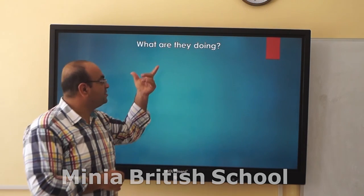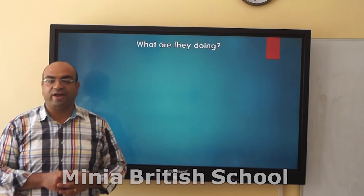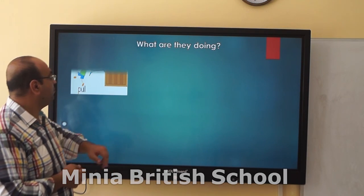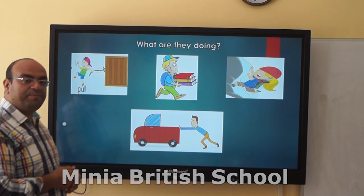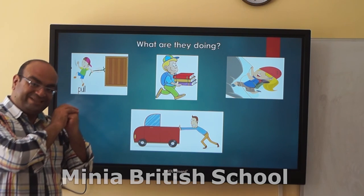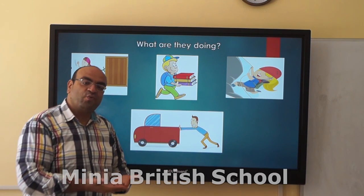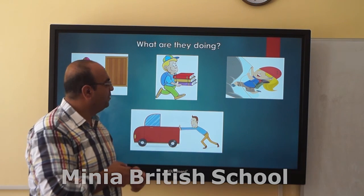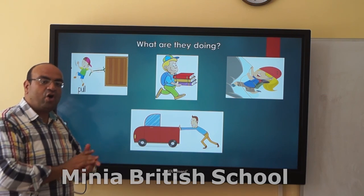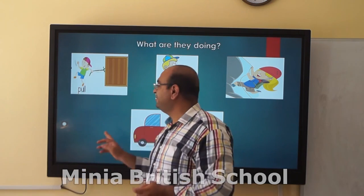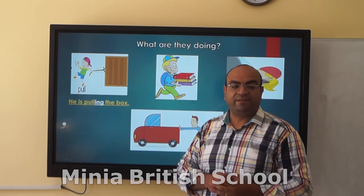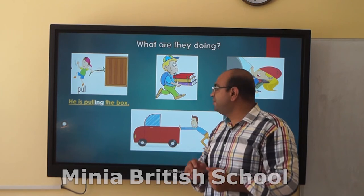What are the children doing? It is a question to describe the action. You can see in the picture — what is he doing to the box? He is pulling the box. What is she doing to the hill? What is he doing to the pub? Let's check that together — he is pulling the box.